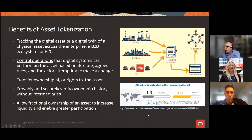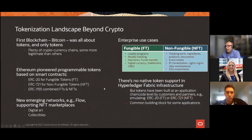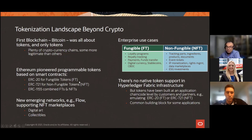Markets and Markets research shows a compound annual growth rate of about 19.5% for the tokenization market — from $1.9 billion in 2020 to $4.8 billion projected for 2025. Beyond crypto, Ethereum introduced programmable tokens based on smart contracts: fungible tokens on ERC-20, non-fungible tokens on ERC-721, and most recently ERC-1155, which combines fungible and non-fungible tokens. New networks like Flow Network also support NFT marketplaces for collectibles and digital art.